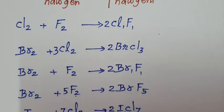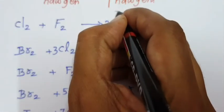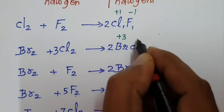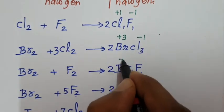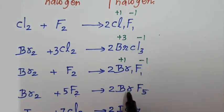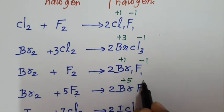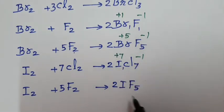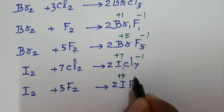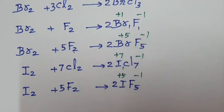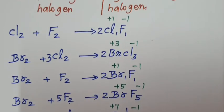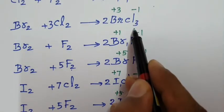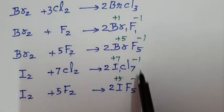In ClF, chlorine is in the +1 oxidation state and fluorine is −1. In BrCl3, bromine is +3 and chlorine is −1. In BrF, bromine is +1 and fluorine is −1. In BrF5, bromine is +5 and fluorine is −1. In ICl7, iodine is +7 and chlorine is −1. In IF5, iodine is +5 and fluorine is −1. To indicate number of atoms: 3 = tri, 5 = penta, 7 = hepta.